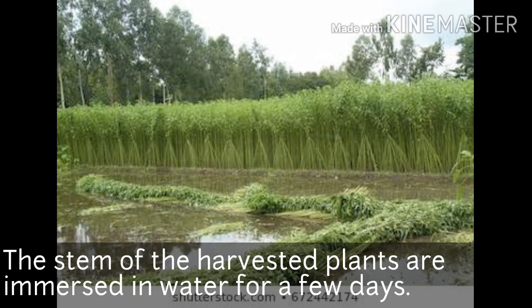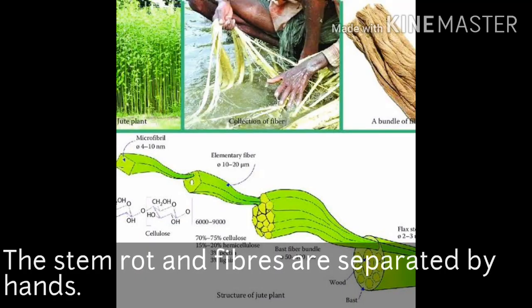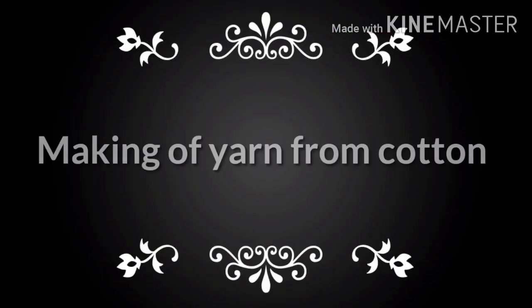In the jute plant, the stems of the harvested plants are immersed in water for a few days. After that, the stem roots and fibers are separated by hands. We put these stems into water for the easy separation of roots and fibers from the stem.